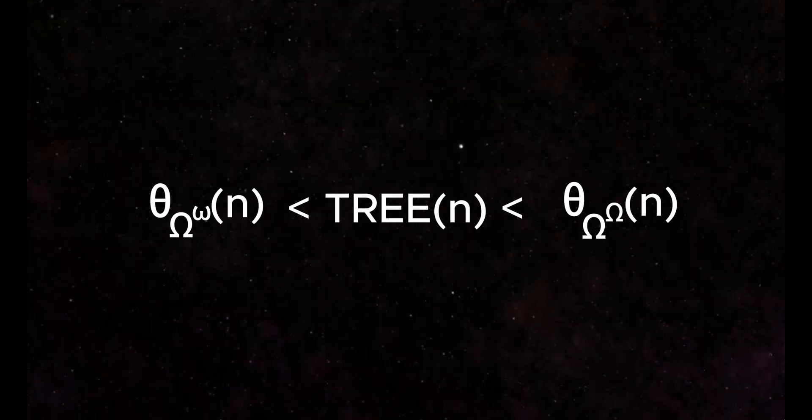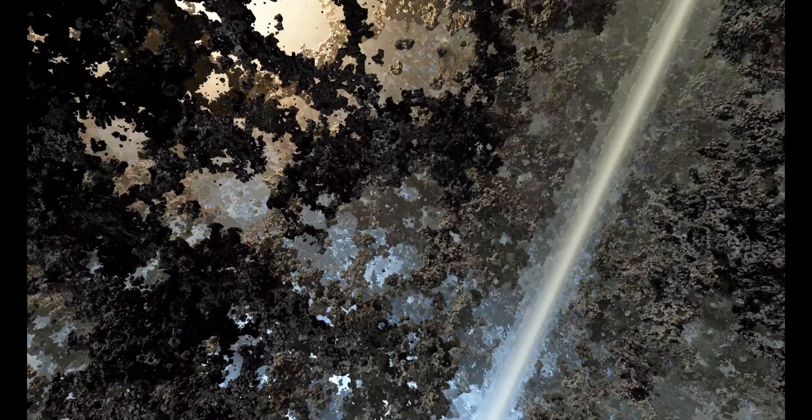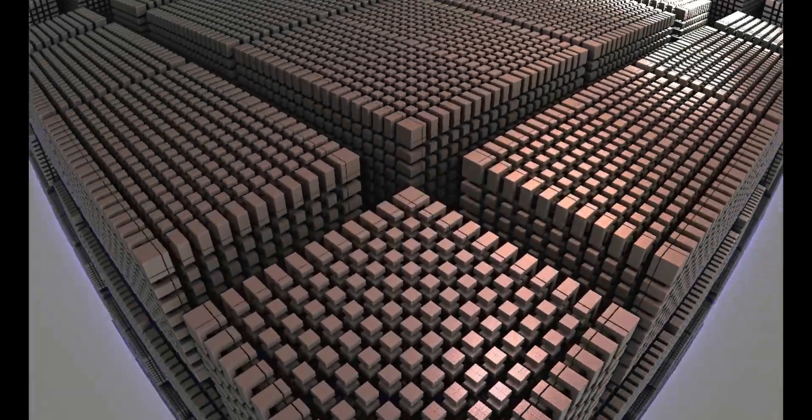This is where the abstract domain of theoretical mathematics really takes over, as we are so far beyond anything we're familiar with that no other landmarks really exist here to help us intuitively understand what we are looking at. The extent to which this hierarchy continues and the depth of notation required to understand it is outside the scope of this video series. Hopefully, however, it gives you an appreciation for how massive TREE(3) is—a giant amongst giants.